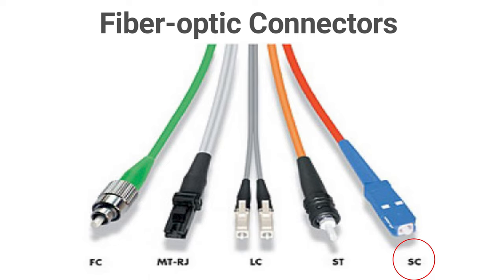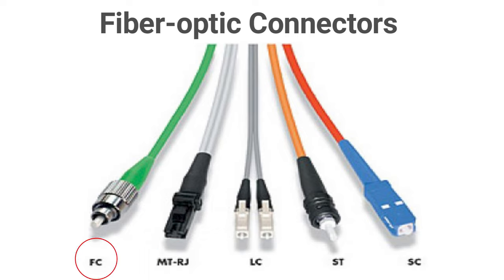Next we have the subscriber connector, which uses a push-pull connector. And then we have mechanical transfer register jack, a connector for two fibers in a very small form factor. Lastly, we have fiber channel connectors, which have a threaded body and are used in environments where vibration is a problem.